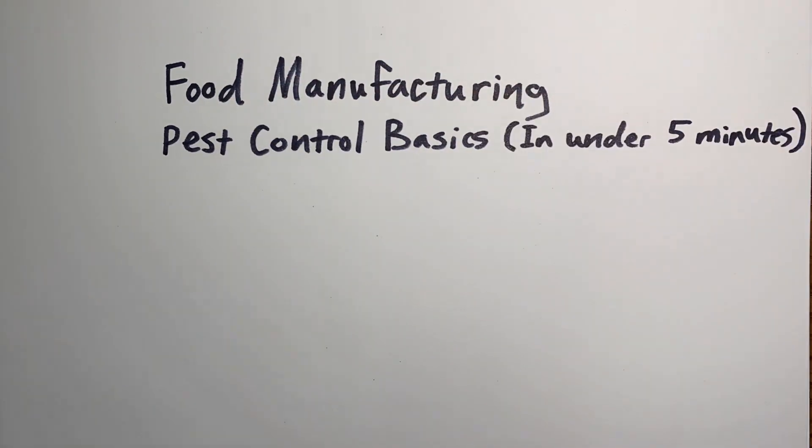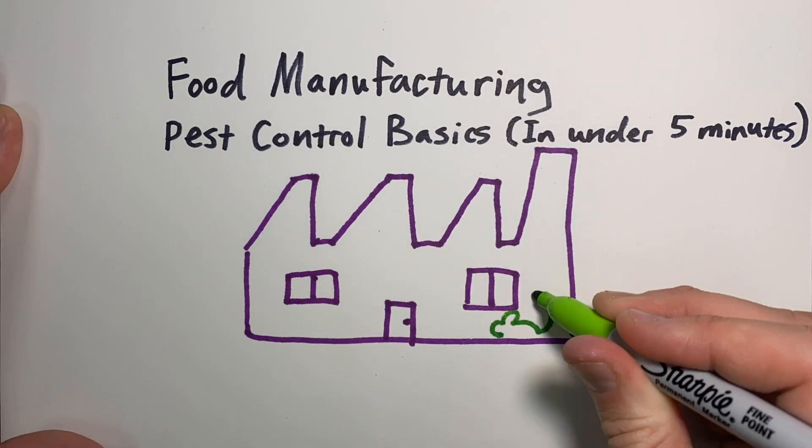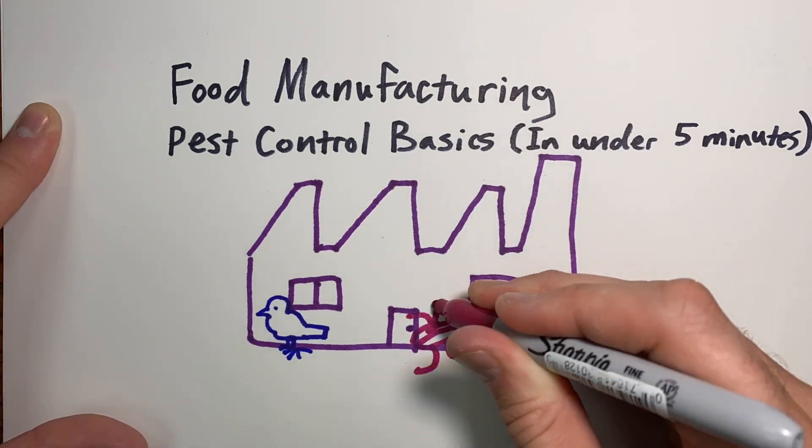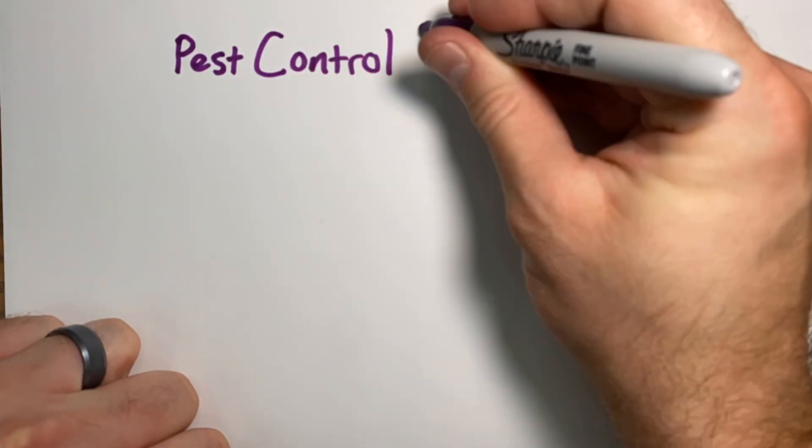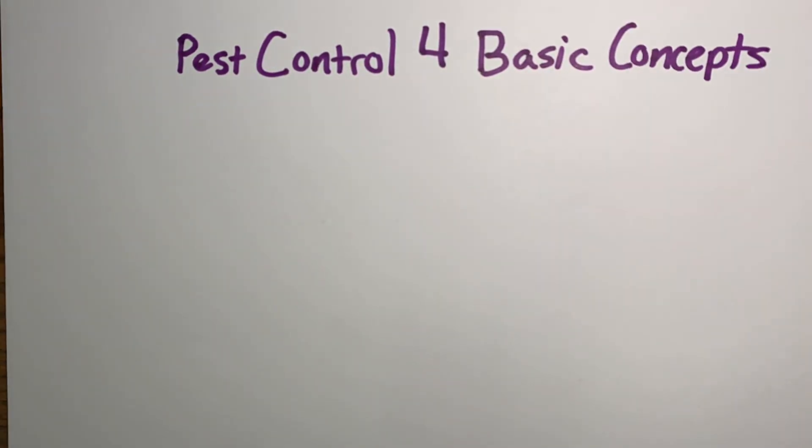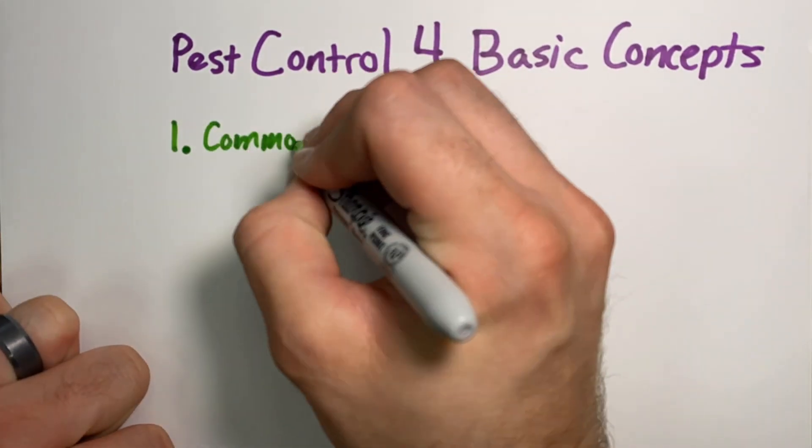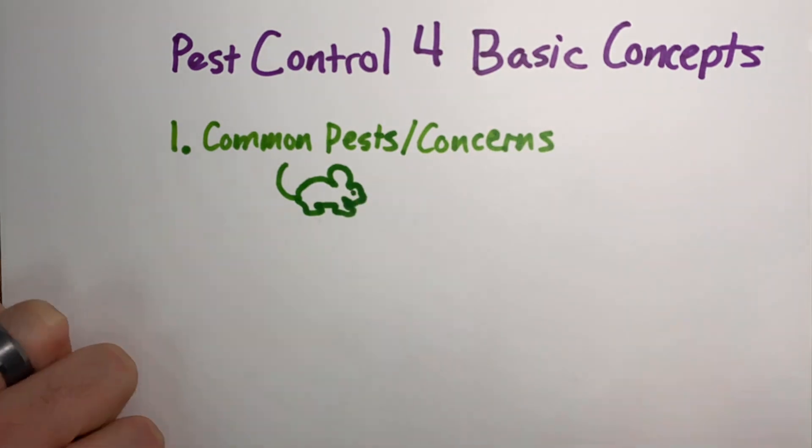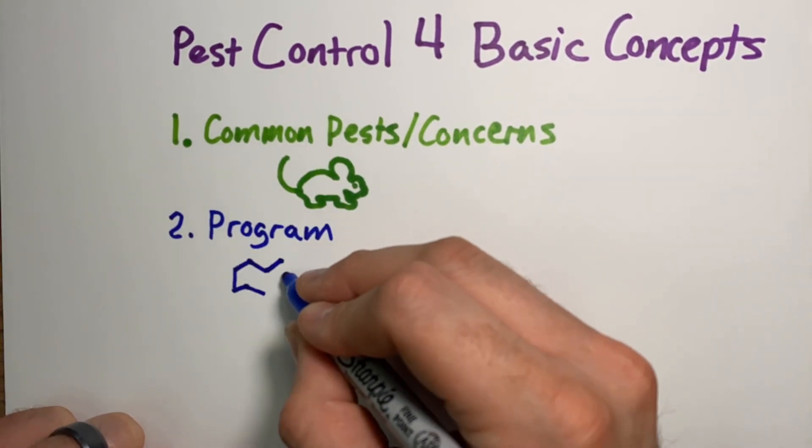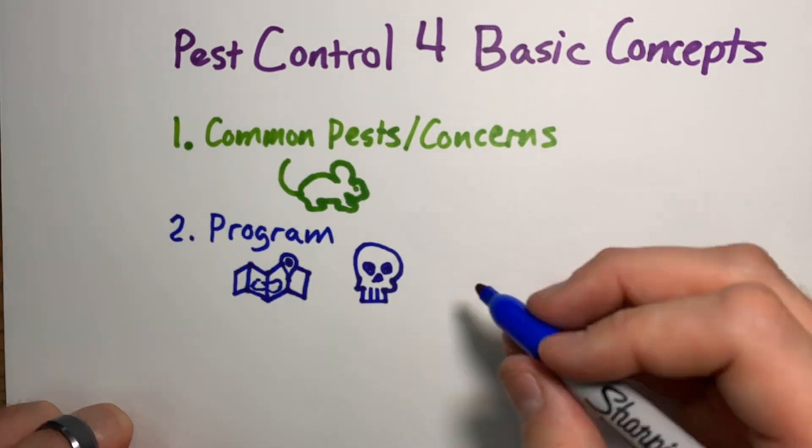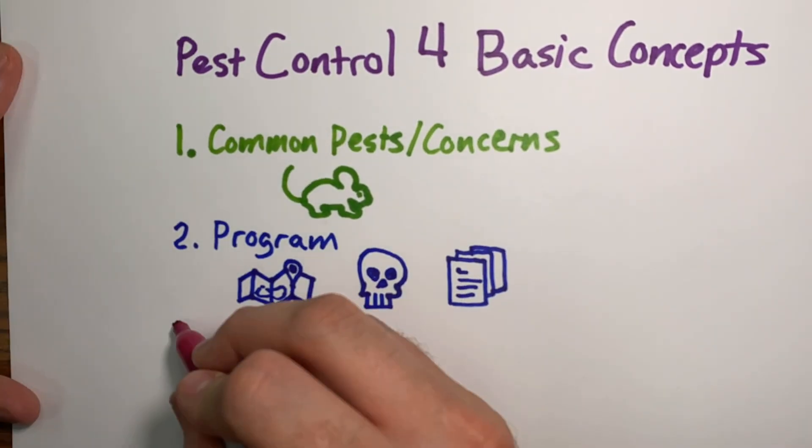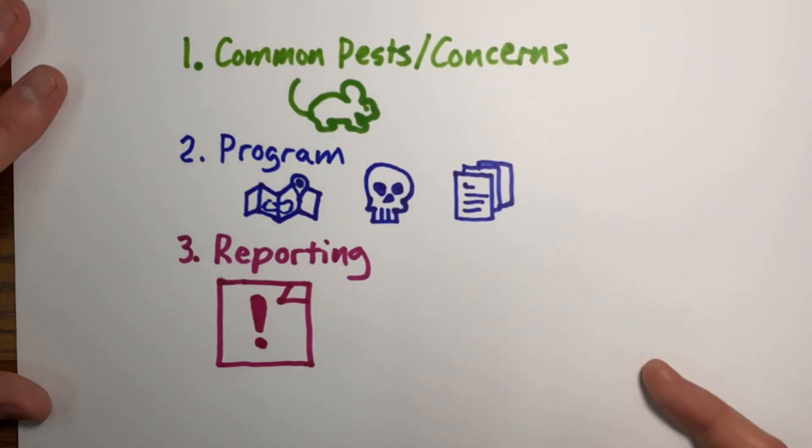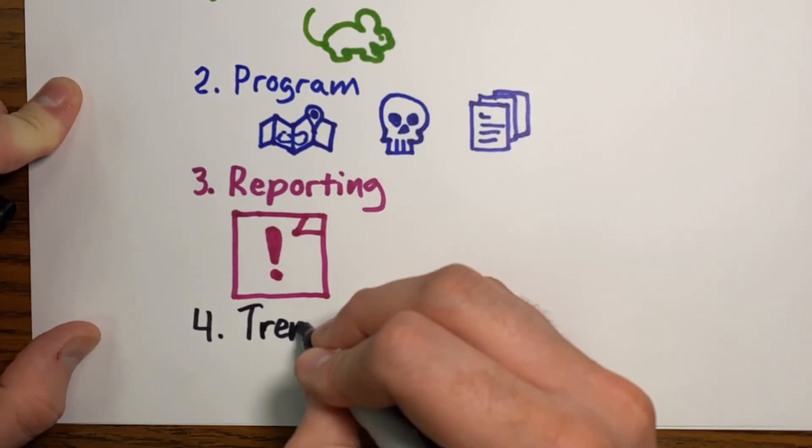Today we're going over food manufacturing pest control basics in under five minutes. We'll cover four basic concepts: What are we worried about? Several pests carry nasty things that can make you sick. Second, what's in a program to control pests? Third, what should you do when you see a pest? Report it. Fourth, over time, what is the report information saying? What are the trends?